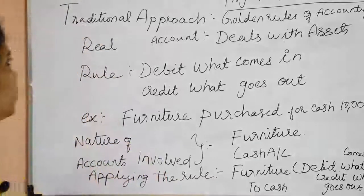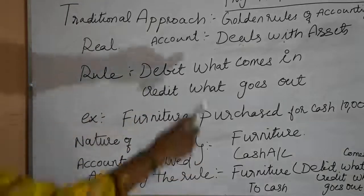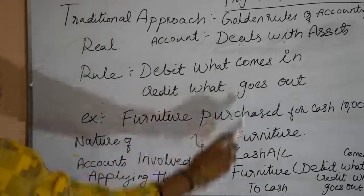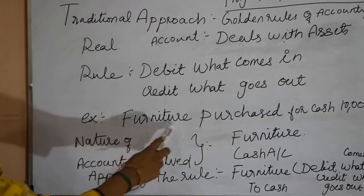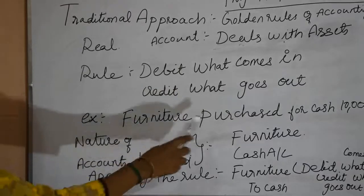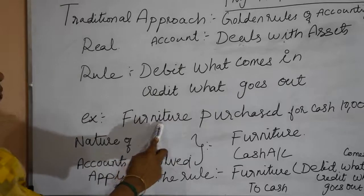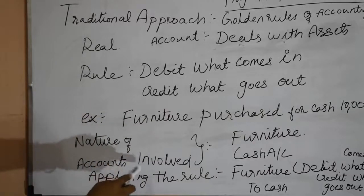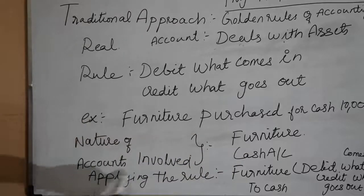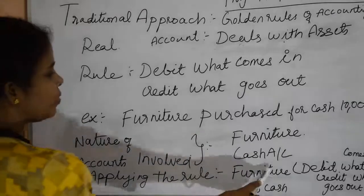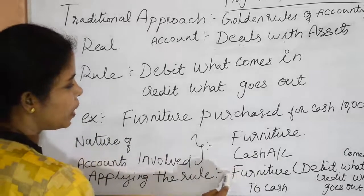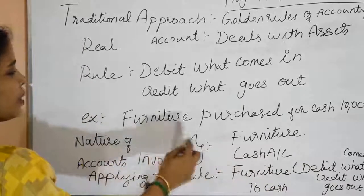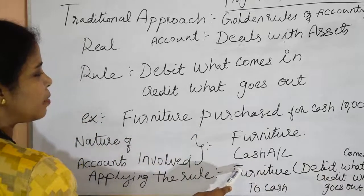Next we are going to see the real accounts. Real accounts deal with assets. The rule is: debit what comes in, credit what goes out. For example: furniture purchased for cash 10,000. The accounts involved are the furniture account and the cash account. Applying the rule: furniture account debit to cash. We debit the furniture because debit what comes in — we are purchasing the furniture, so it is coming in.